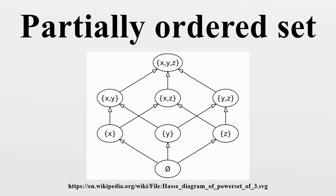Interval: For A ≤ B, the closed interval [A, B] is the set of elements X satisfying A ≤ X ≤ B. It contains at least the elements A and B. Using the corresponding strict relation <, the open interval (A, B) is the set of elements X satisfying A < X < B. An open interval may be empty even if A < B. For example, the open interval (1, 2) on the integers is empty since there are no integers i such that 1 < i < 2. Sometimes the definitions are extended to allow A > B, in which case the interval is empty. The half-open intervals [A, B) and (A, B] are defined similarly. Using the interval notation, the property A is covered by B can be rephrased equivalently as [A, B] = {A, B}. This concept of an interval in a partial order should not be confused with the particular class of partial orders known as the interval orders.